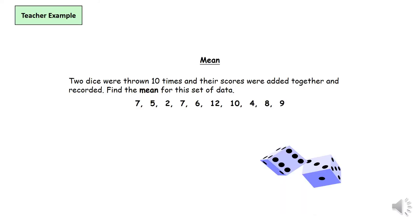Okay, our first example. To find the mean of this set of data, two dice were thrown ten times and their scores were added together and recorded. Find the mean for this set of data.